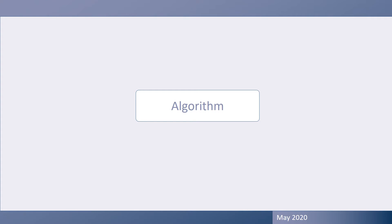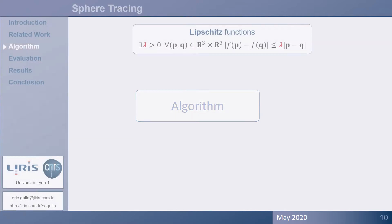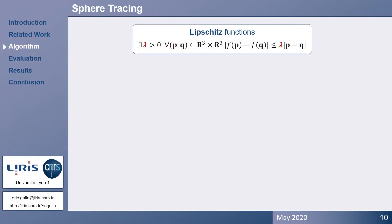So, let's have a look at the algorithm. Recall that the function f is Lipschitz if and only if there exists a constant lambda, such that f of p minus f of q is lower than the distance between p and q times lambda.